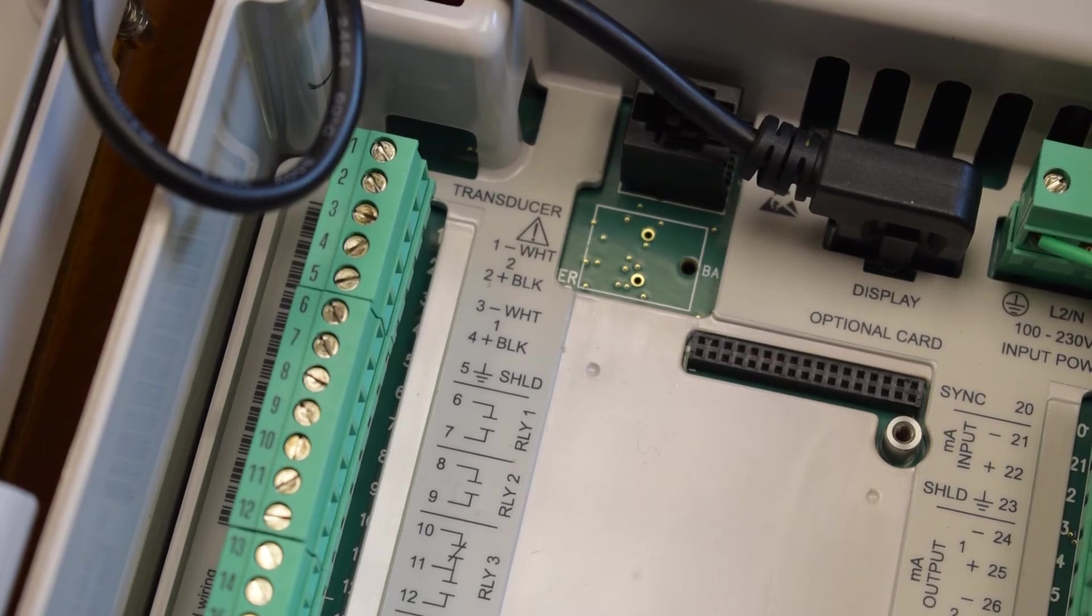Underneath terminals 1 through 5 are the wiring for the relays. Your application may or may not use these. Refer to the control drawings for your specific project.